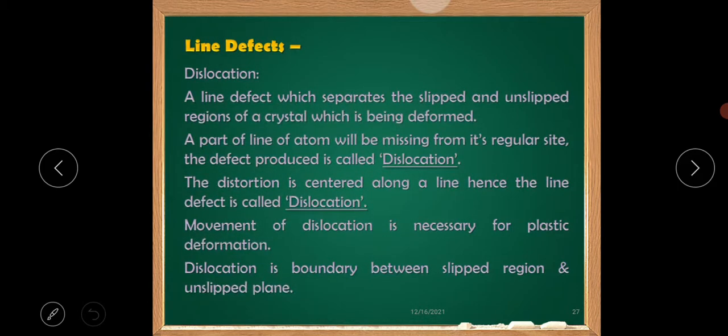Line defects. Dislocation. A line defect which separates the slipped and unslipped regions of a crystal which is being deformed. A part of line of atom will be missing from its regular site. The defect produced is called dislocation. The distortion is centered along a line, hence the line defect is called dislocation.